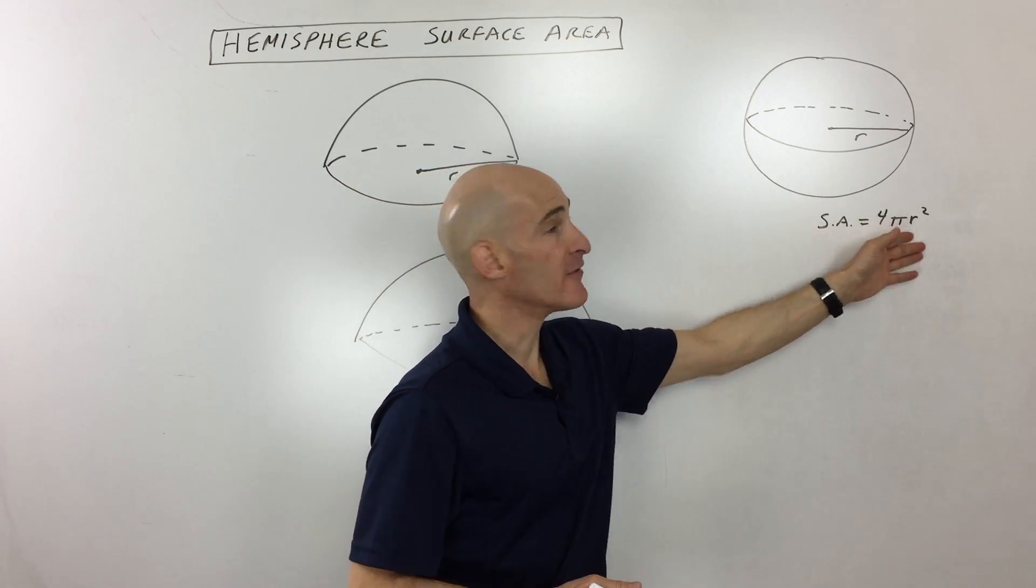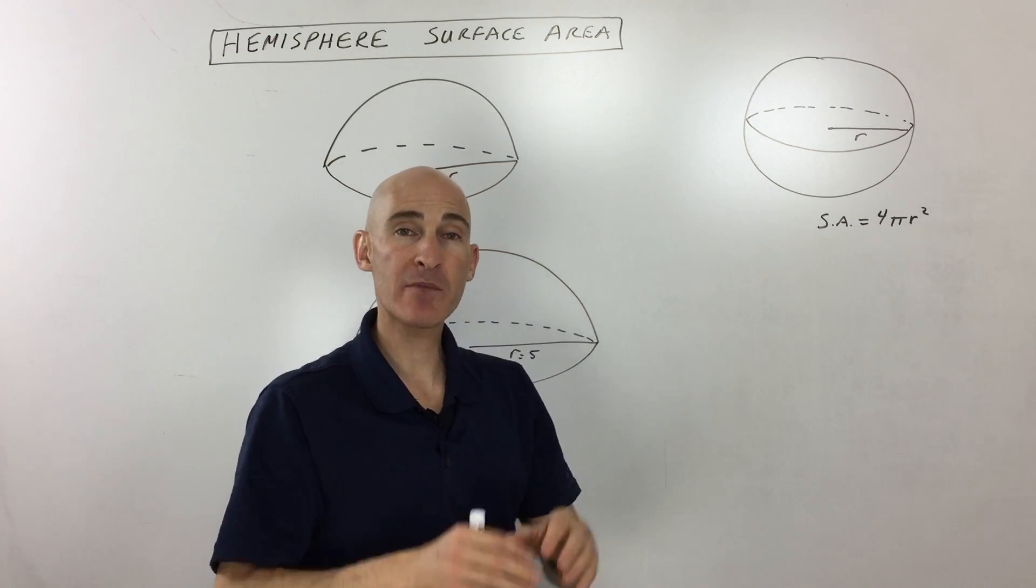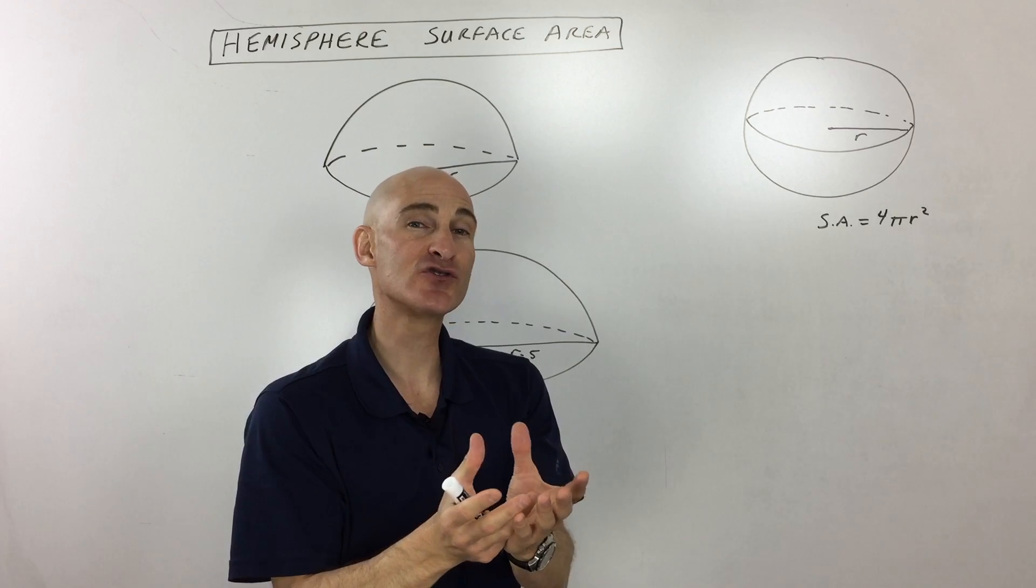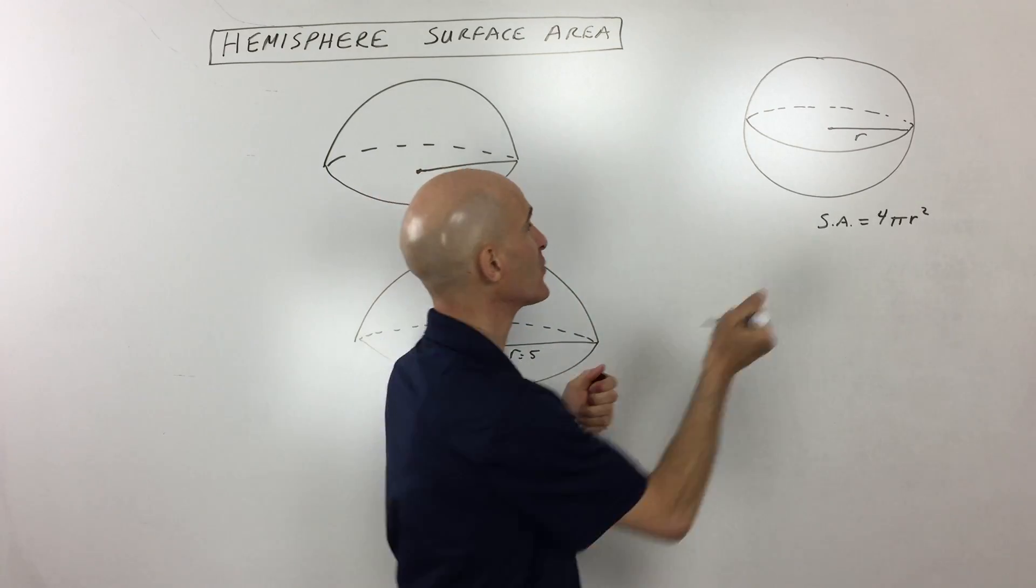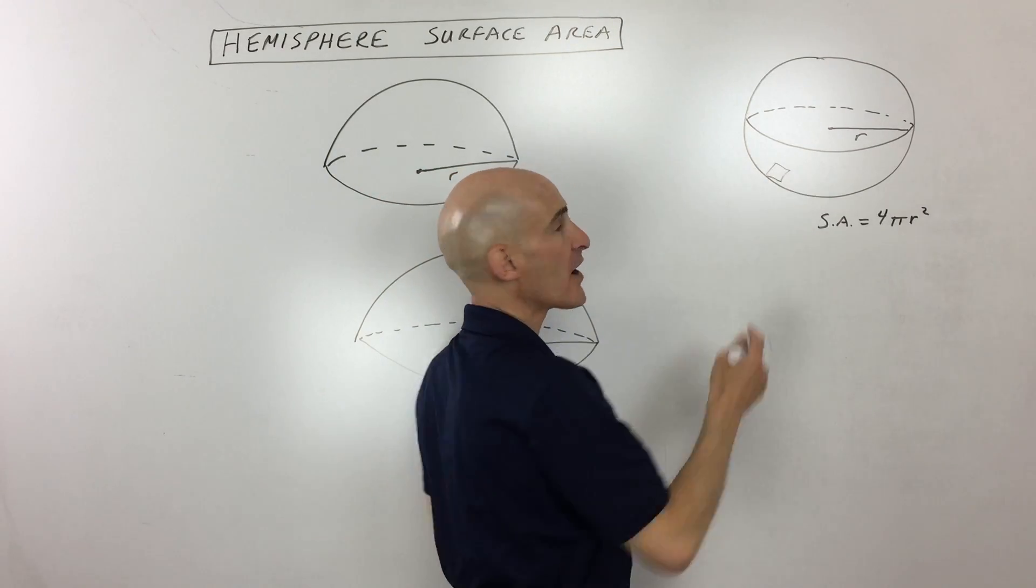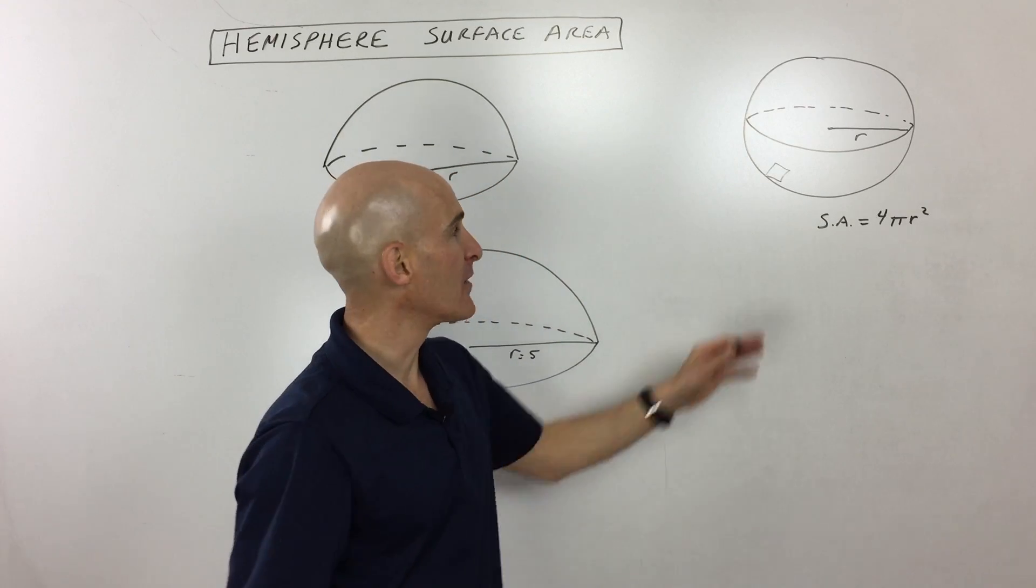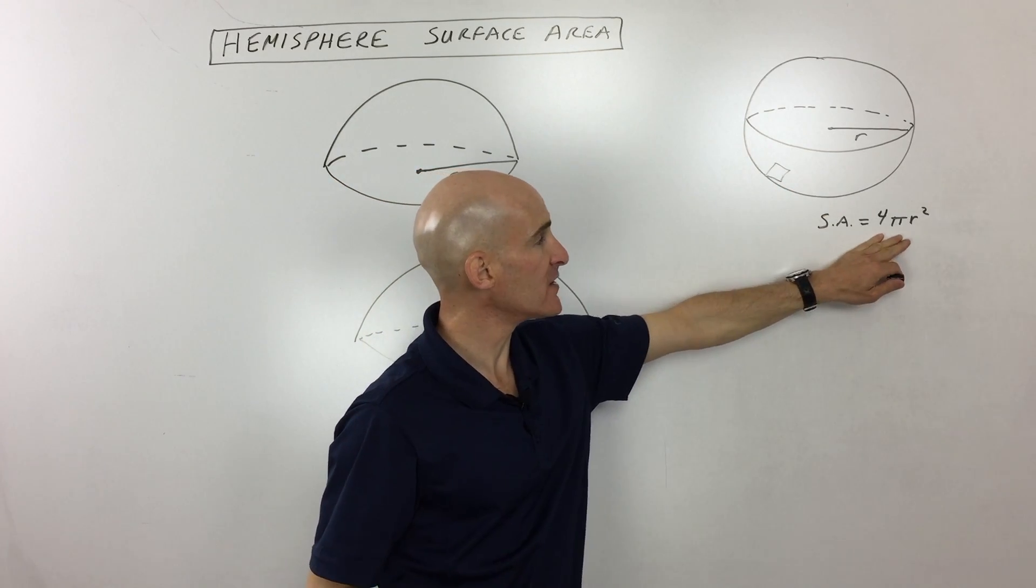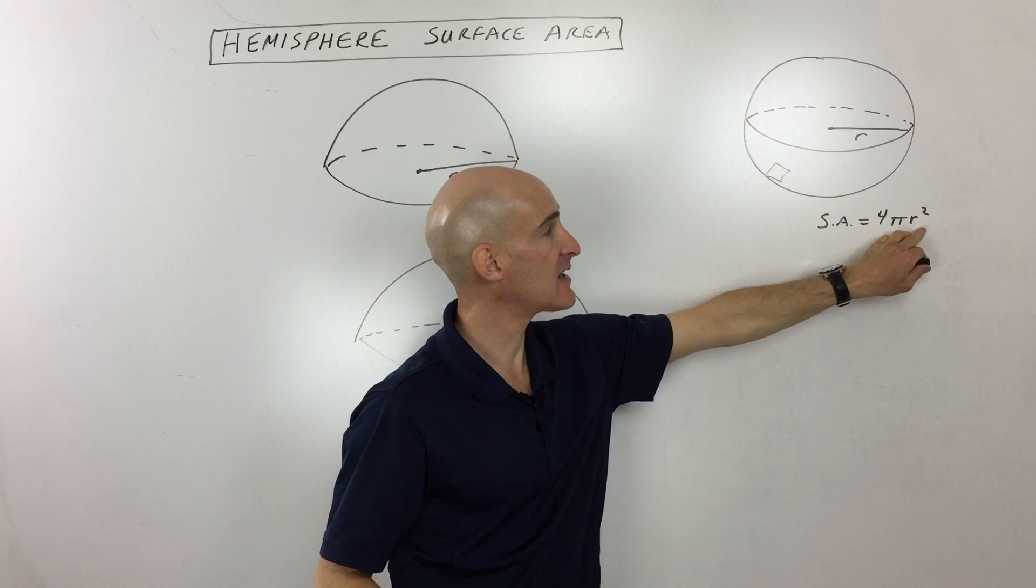First thing you want to know is the surface area of an entire sphere. When you're talking about surface area, you're talking about that outer surface, the area. If you were to cover this with little one-by-one square patches, how many would cover that outer surface? The formula is 4 times pi times the radius squared.